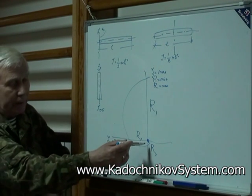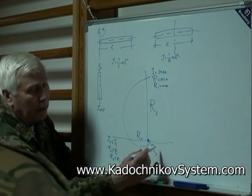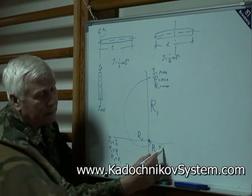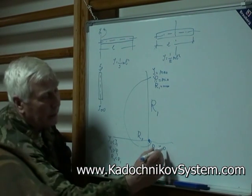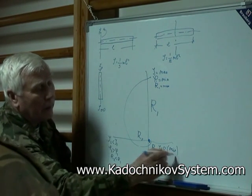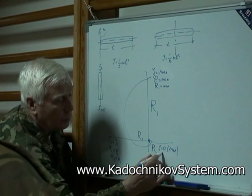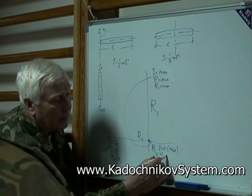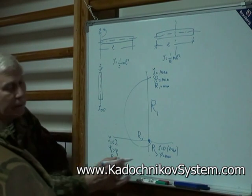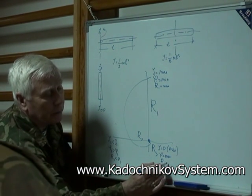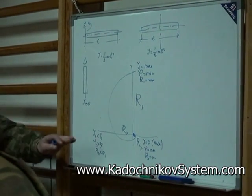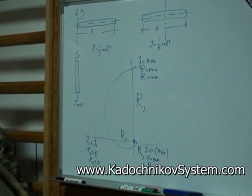Now we look at this one. If this radius is zero, then the moment of inertia is approximately zero, or minimum. And the angular velocity? Maximum. The third radius is minimal. This is what you see — this is what you do right now. That is about a plane.